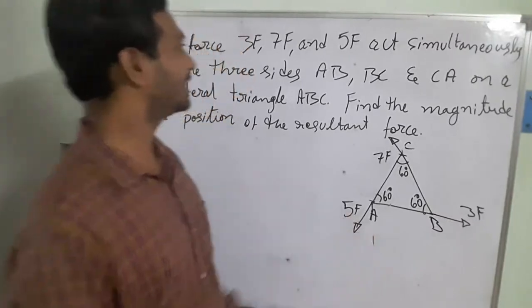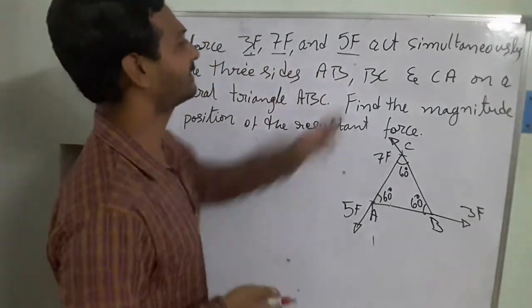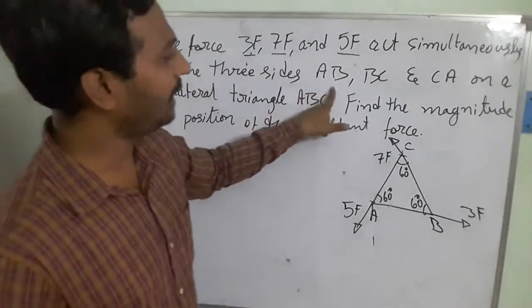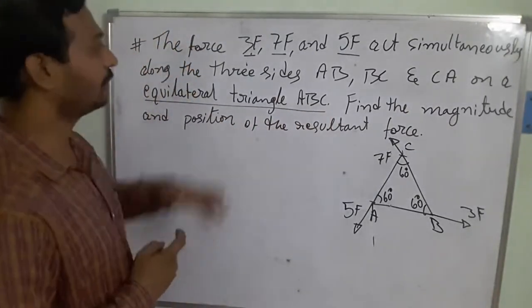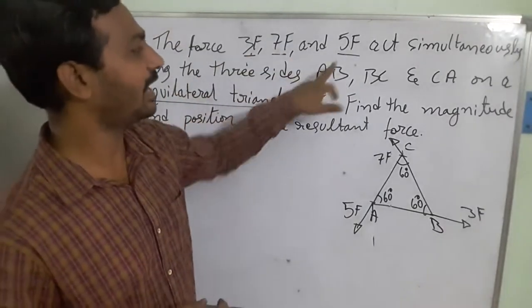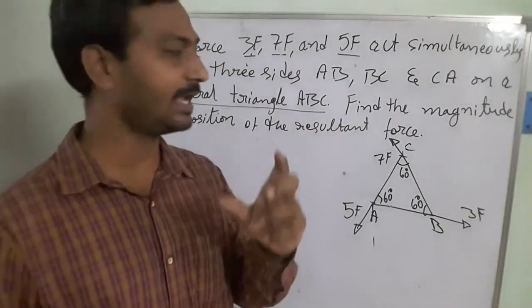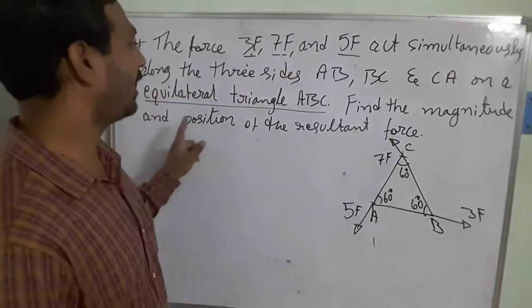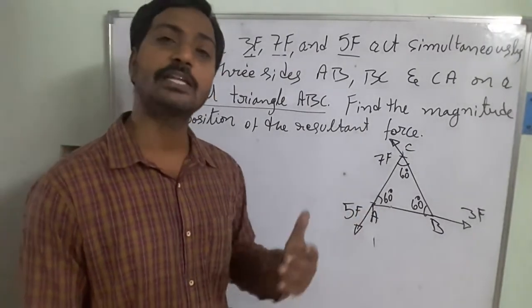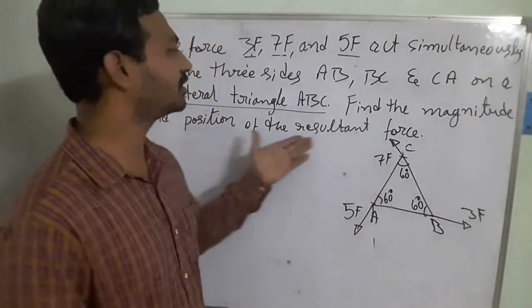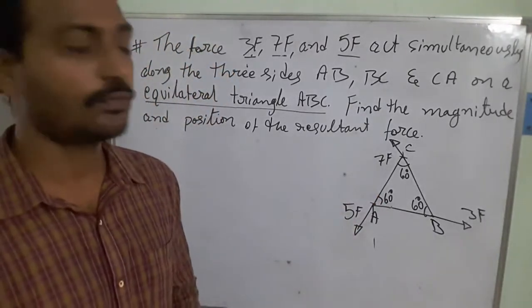The problem: forces of magnitude 3f, 7f, and 5f act simultaneously along the three sides AB, BC, and CA of an equilateral triangle ABC. An equilateral triangle means all sides and angles are equal. We need to find the magnitude and the position of the resultant — that means finding the direction in which this body is trying to move, and then finding the position using moments.